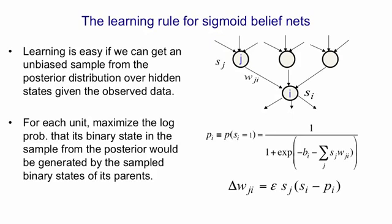So to summarize, if we have an assignment of binary states to all the hidden nodes, then it's easy to do maximum likelihood learning in our typical stochastic way. Where we sample from the posterior and then we update the weights based on that sample and we average that update over a mini-batch of samples.